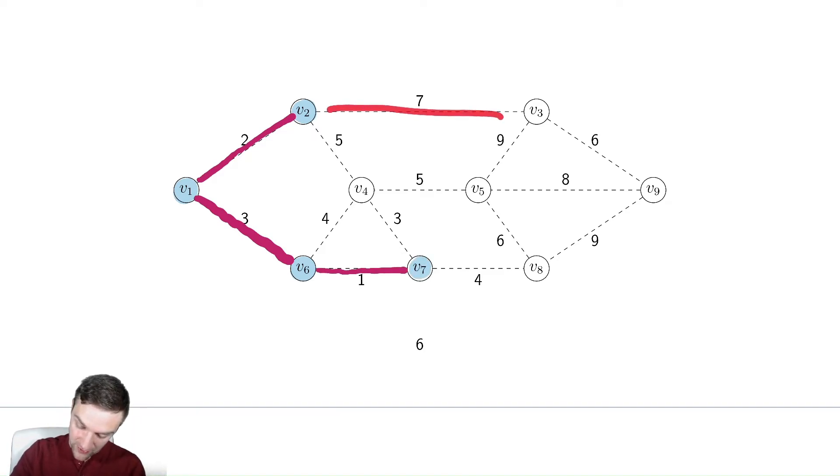And now we have seven, five, four, three, four. The winner of that is three, so we add three to the minimum spanning tree.